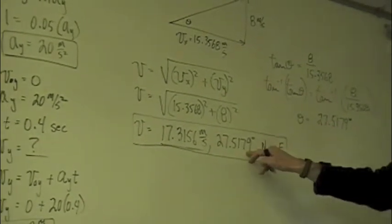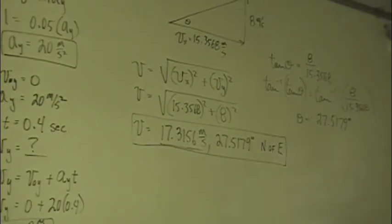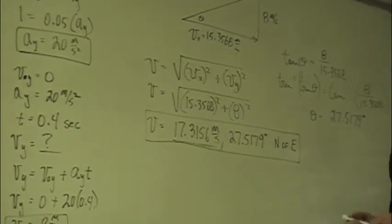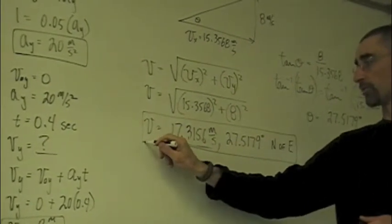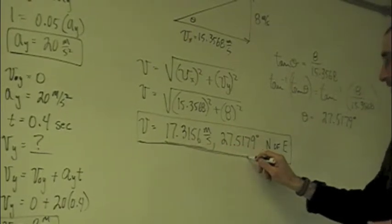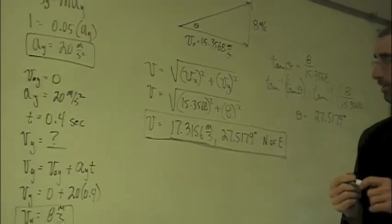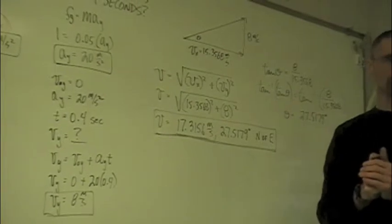Which then we plug here, and that's going to be going north of east. So, the velocity of that puck after the 0.4 second contact is going to be 17.3156 meters per second.